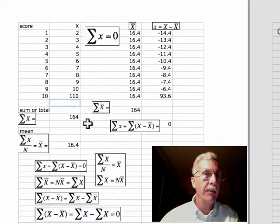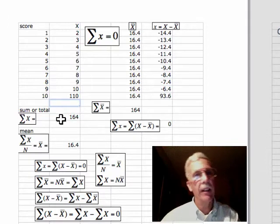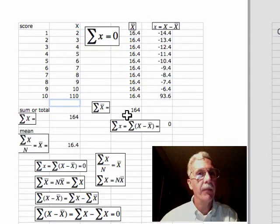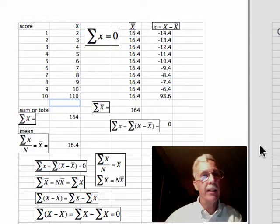So here again, we've got the sum of the scores is 164, and the sum of the means is 164.